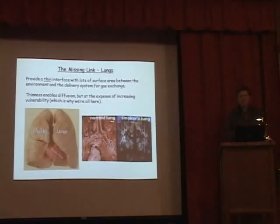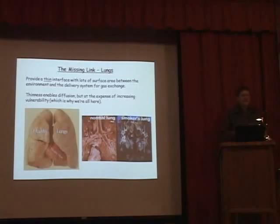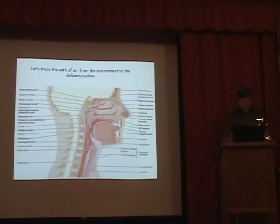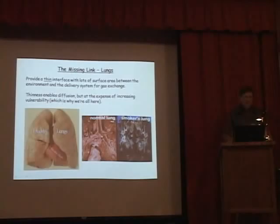The digestive tract, by contrast, is a harsh environment full of acids and enzymes — even toxic materials sometimes have difficulty causing problems there. The respiratory tract, though, is super vulnerable. Here's what normal lung tissue looks like on the exterior, a cutaway view — and this is what a smoker's lung looks like: not so good. Very delicate tissues, highly impacted by foreign materials that get into the system.